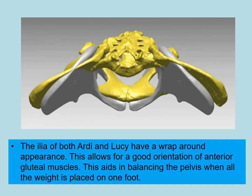Comparing the Australopithecus afarensis pelvis and the Ardipithecus ramidus pelvis, both have a wraparound appearance allowing good orientation of anterior gluteal muscles. This aids in balancing the pelvis when all weight is placed on one foot — used as evidence of bowl shaping indicating bipedality.